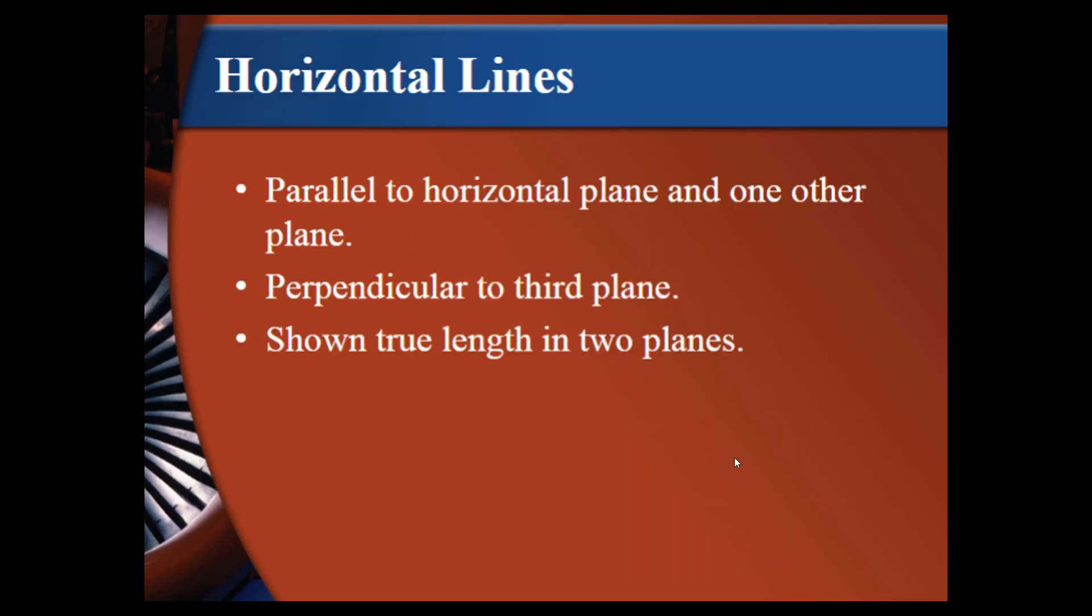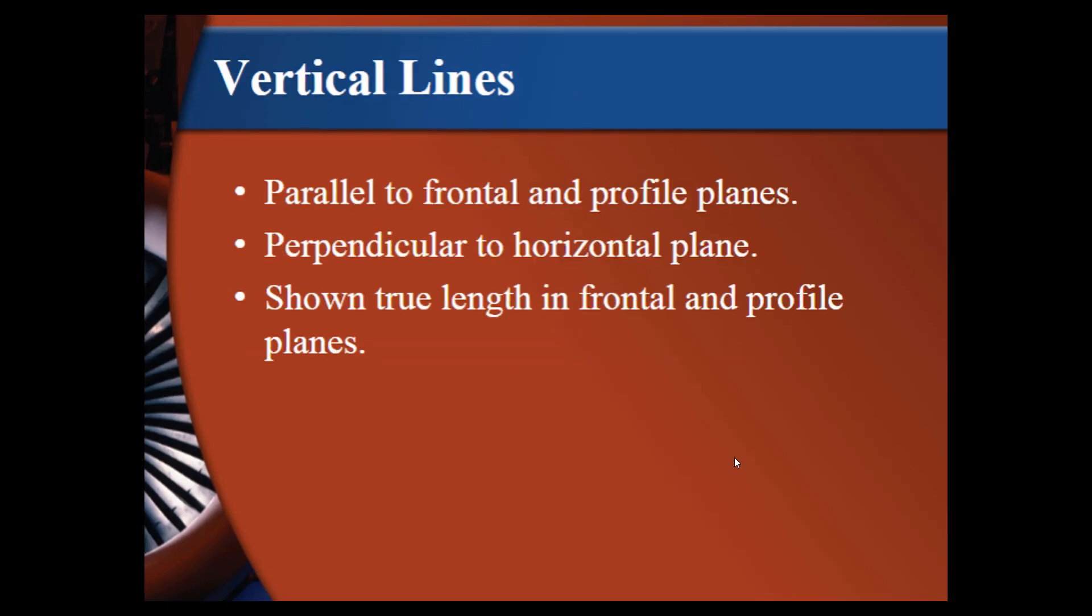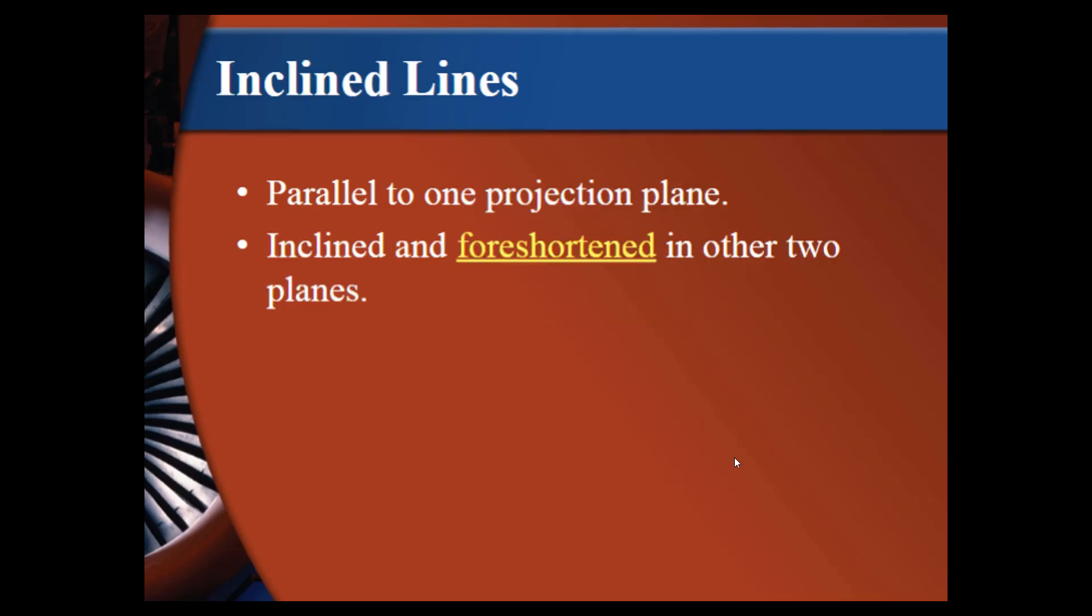Horizontal lines. These are parallel to the horizontal plane and one another plane and one other plane. Perpendicular to the third plane and shown true length in two planes. This sounds pretty complicated, but it's really actually pretty common knowledge and when you get into drawing this will become a lot more clear. Vertical lines. Parallel to frontal and profile planes. Perpendicular to horizontal plane. And shown true length in frontal and profile planes. That's kind of hard to follow in words, but graphically it's much easier to understand.